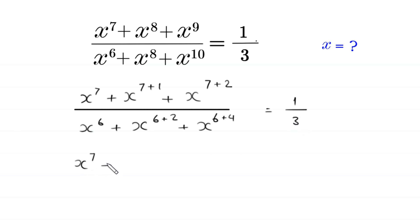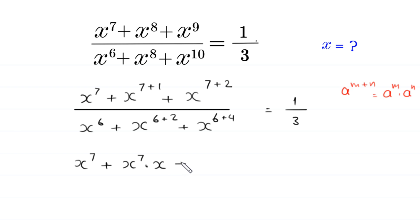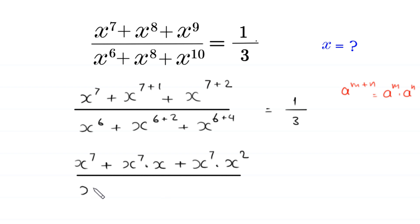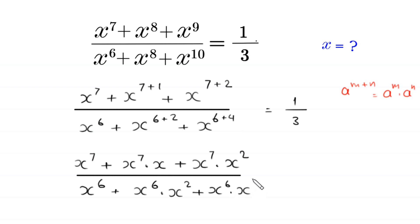Next, x to the power 7 plus — by using the power rule a to the power m plus n is equal to a to the power m times a to the power n — this x to the power 7 plus 1 will become x to the power 7 times x, plus this x to the power 7 plus 2 will become x to the power 7 times x squared, divided by x to the power 6 plus x to the power 6 times x to the power 4, is equal to 1 over 3.